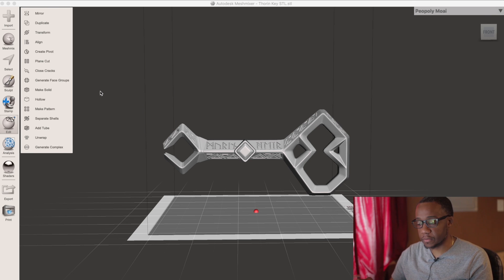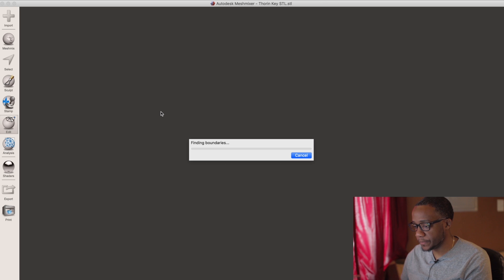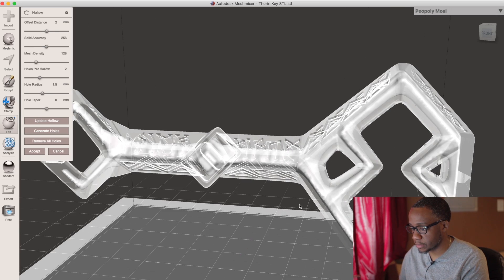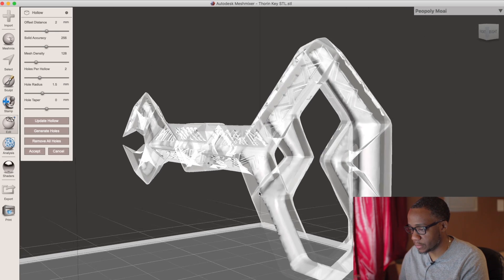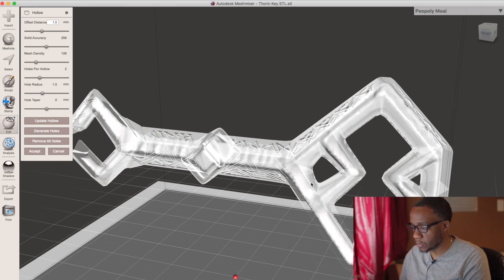We're going to hollow this key out and add some holes so the resin can escape from the key as it's printing. Go ahead and select the key and hit hollow, then it'll start to automate the hollowing process. It's showing us what it looks like once it's hollowed out.